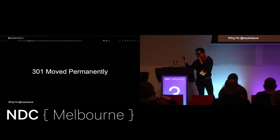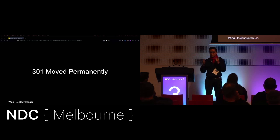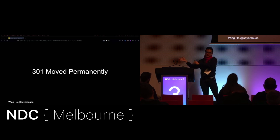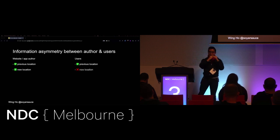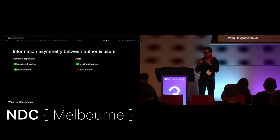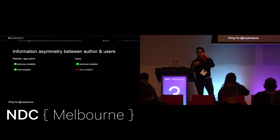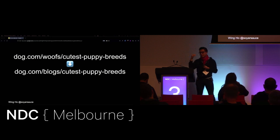301 is an HTTP status code that you can use to say: hey, I've got this old resource you're trying to access — here's the location for the new thing. It's been moved, it's been shifted. We're trying to close a gap on this information asymmetry between you as the author and your users. Because you know the previous and the new location, but your users only have the previous location — so you're helping them get from that old URL to the new one.